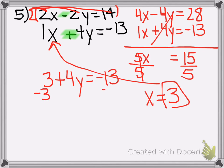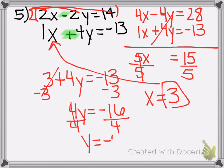And then I solve it. So minus 3 on both sides. 4y equals negative 16. Divide by 4. And the y equals negative 4.